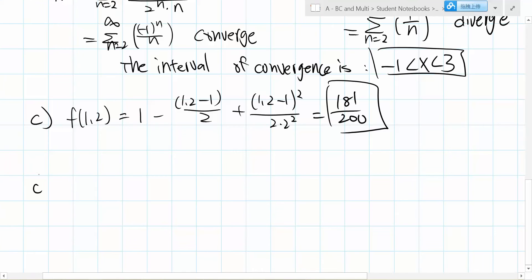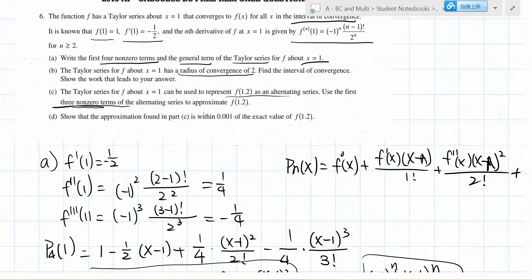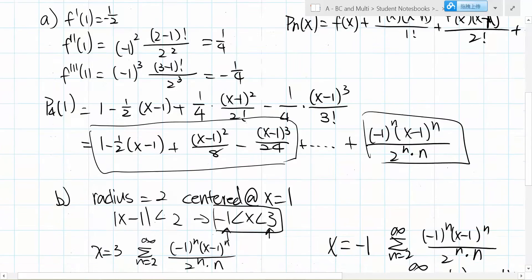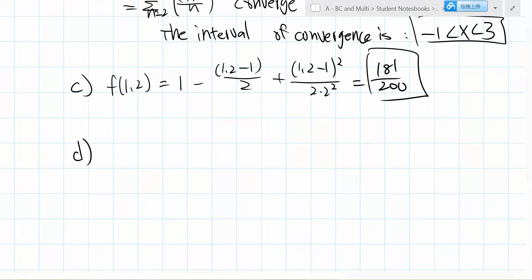This problem has only part d left. Part d wants us to show that the approximation of f(1.2) found in part c is within 0.001 of the exact value of f(1.2).